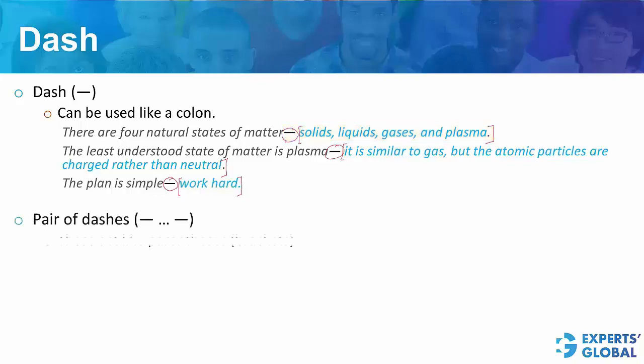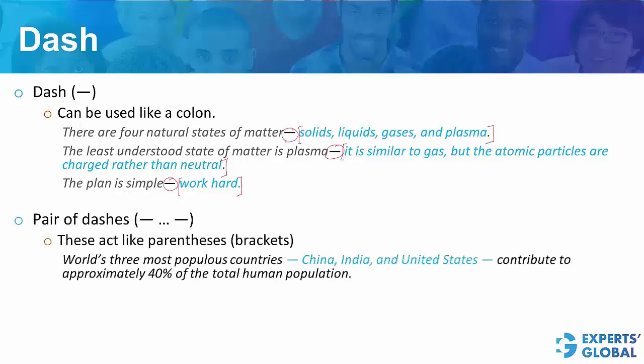Then, a pair of dashes very well work like brackets. Look at this example here. World's 3 most populous countries. And then, you see names of these 3 countries have come here.